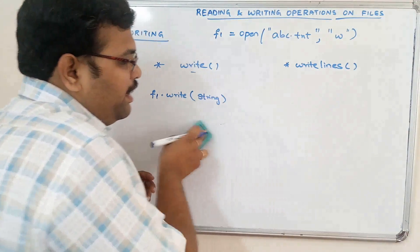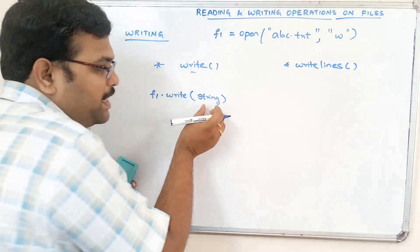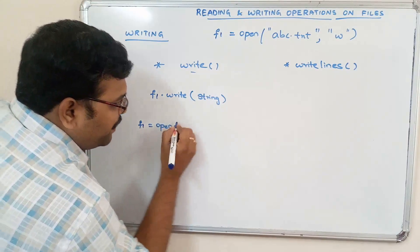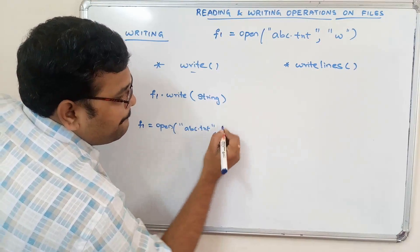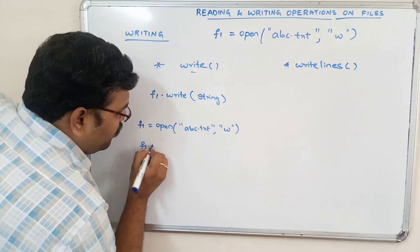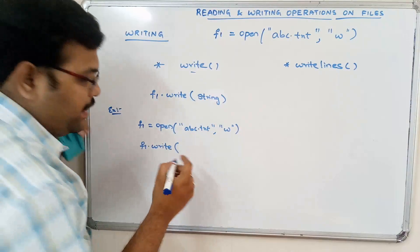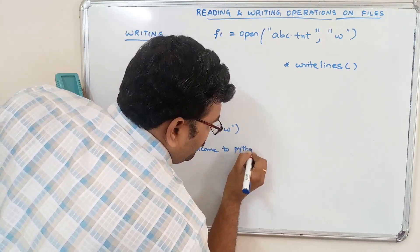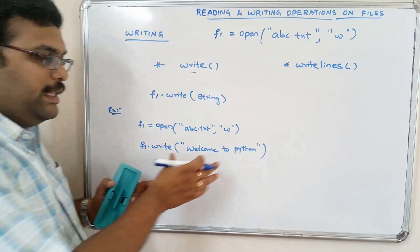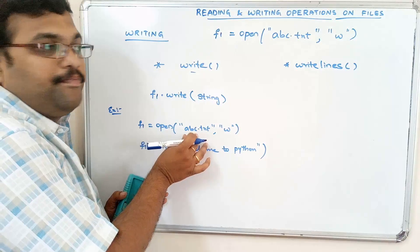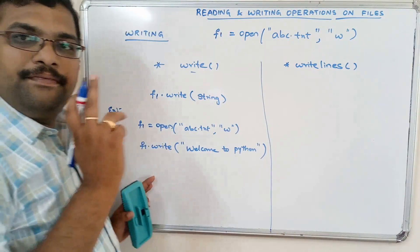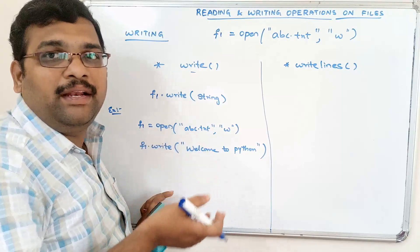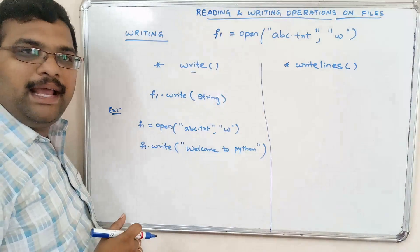Anything — alphabets, numbers, symbols — can be written into a file as a string argument. For example: f1 = open('abc.txt', 'w'), then f1.write('Welcome to'). This content will automatically be written into abc.txt. Note that write() does not add a newline character, so it will not treat each call as a new line.